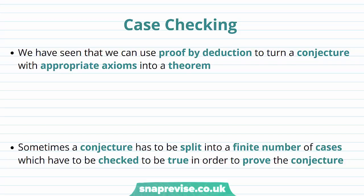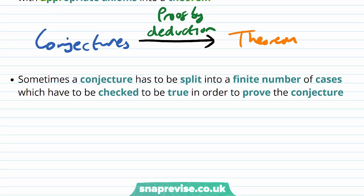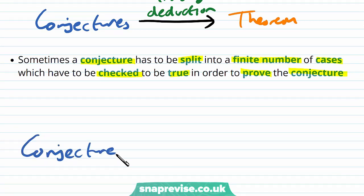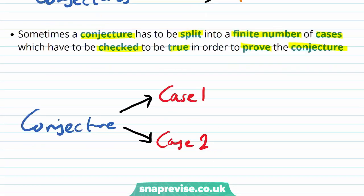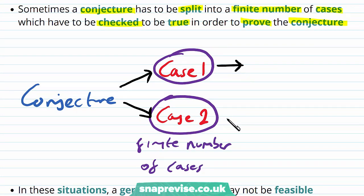So how can we use case checking to prove results? We've seen that we can use proof by deduction to turn a conjecture with appropriate axioms into a theorem. We can take our initial conjecture based on some results in particular and apply the process of proof by deduction and turn the conjecture into a theorem.